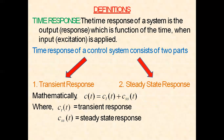Time domain analysis definition. The time response of a system is the output response which is a function of time. When an input — called the excitation — is applied to a particular system, the output or response of the system obtained as a function of time is generally known as time response. The time response of a control system consists of two parts: one is the transient response and the second is the steady state response.